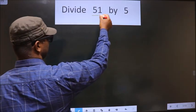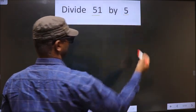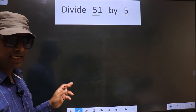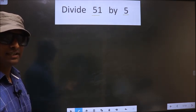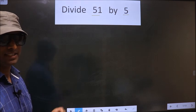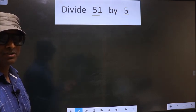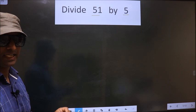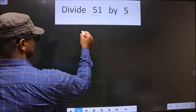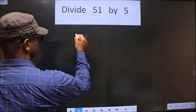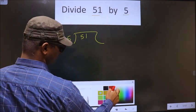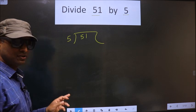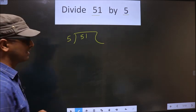Divide 51 by 5. While dividing this, many do the mistake. Where do they go wrong? I will tell you. But before we start, we should frame it in this way. See, 51 divided by 5. Okay, next.